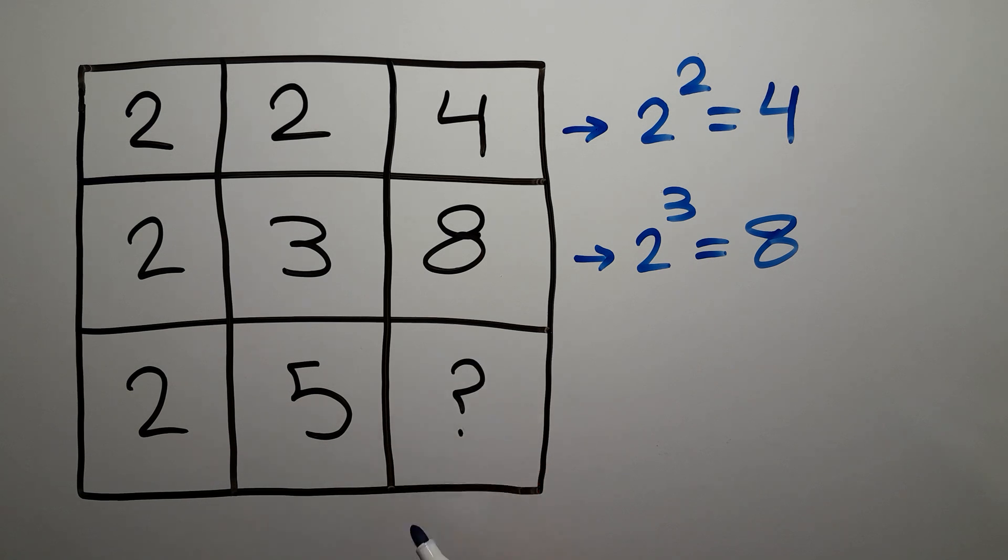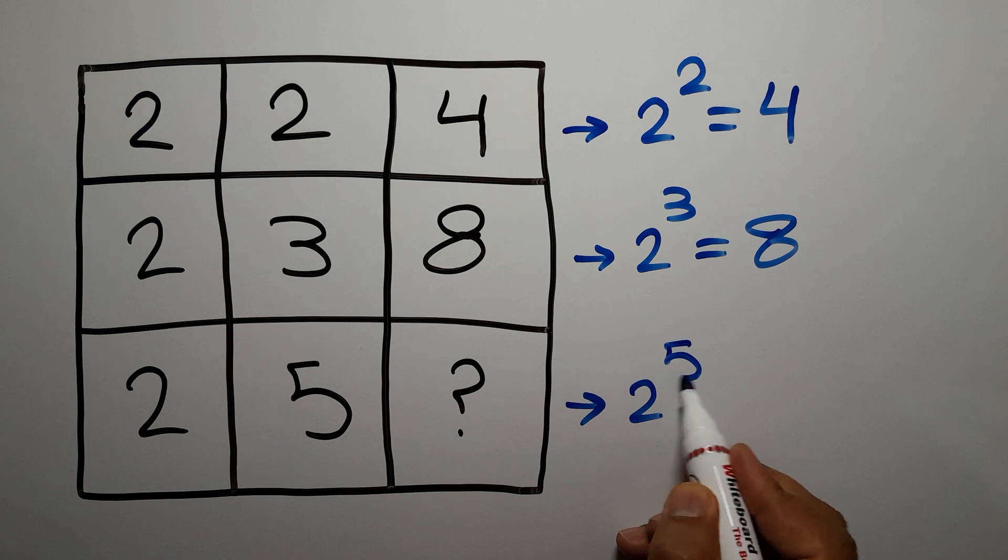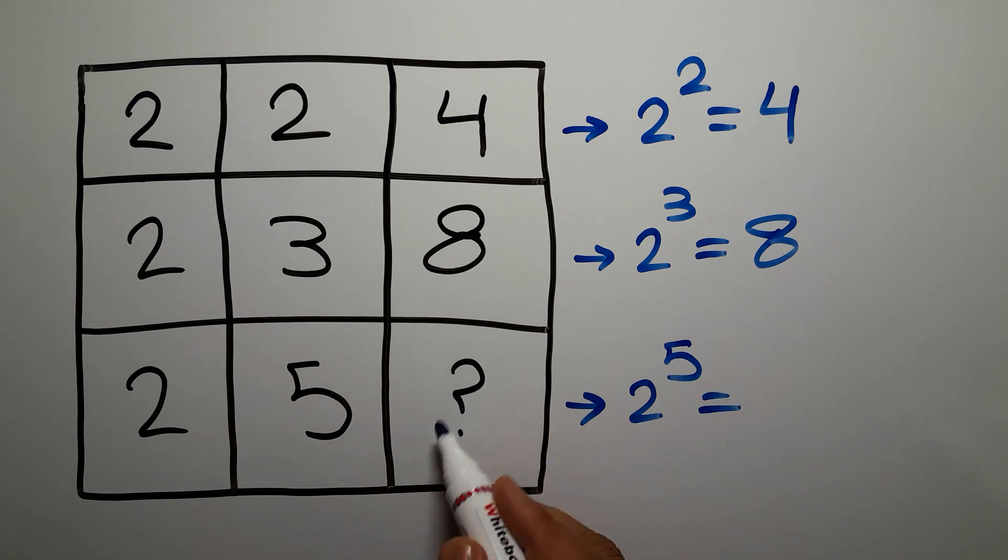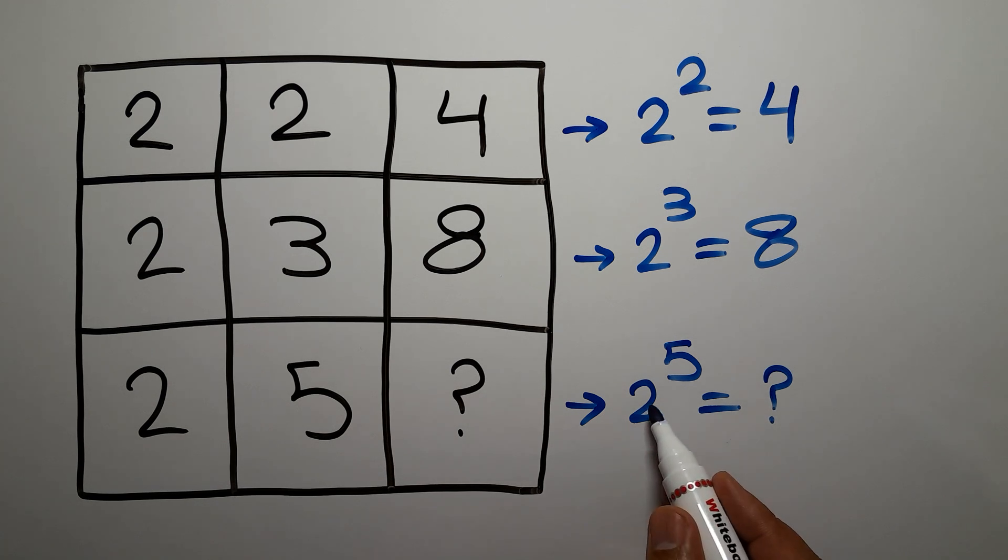In the third row we have 2, 5, and question mark. The first number, which is 2, to the power of the second number, which is 5, gives us the third number, which is question mark. So therefore 2 to the power of 5 equals question mark. 2 to the power of 5 is just 32, so 32 equals question mark. That means our final answer to this problem is just 32.